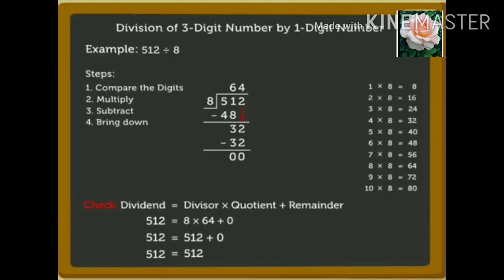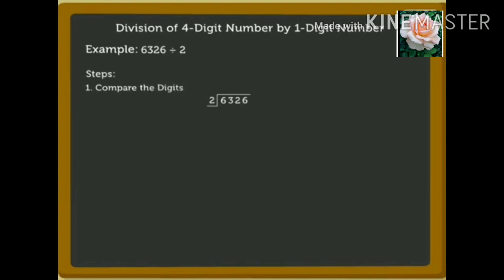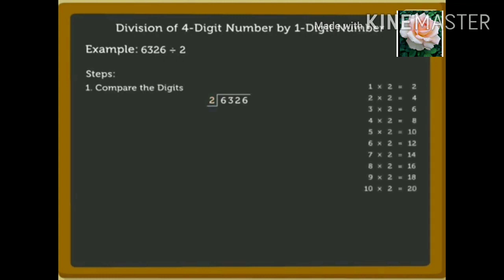How about solving one more problem? This time we will take a 4 digit number. What is 6,326 divided by 2? We will use the same process explained in the previous example. We start by comparing the digit in the thousands place, that is 6, with 2. Since 6 is greater than 2, we can divide 6 by 2. We use the table of 2 such that the product is equal to or less than and nearest to 6.